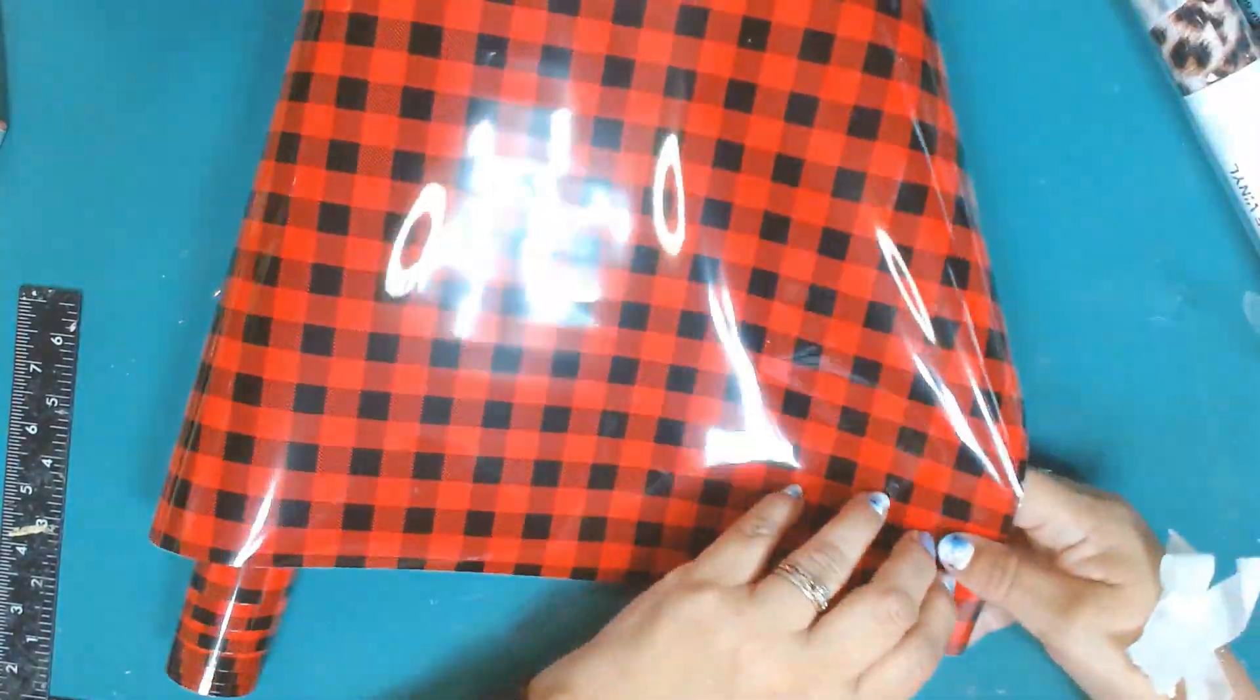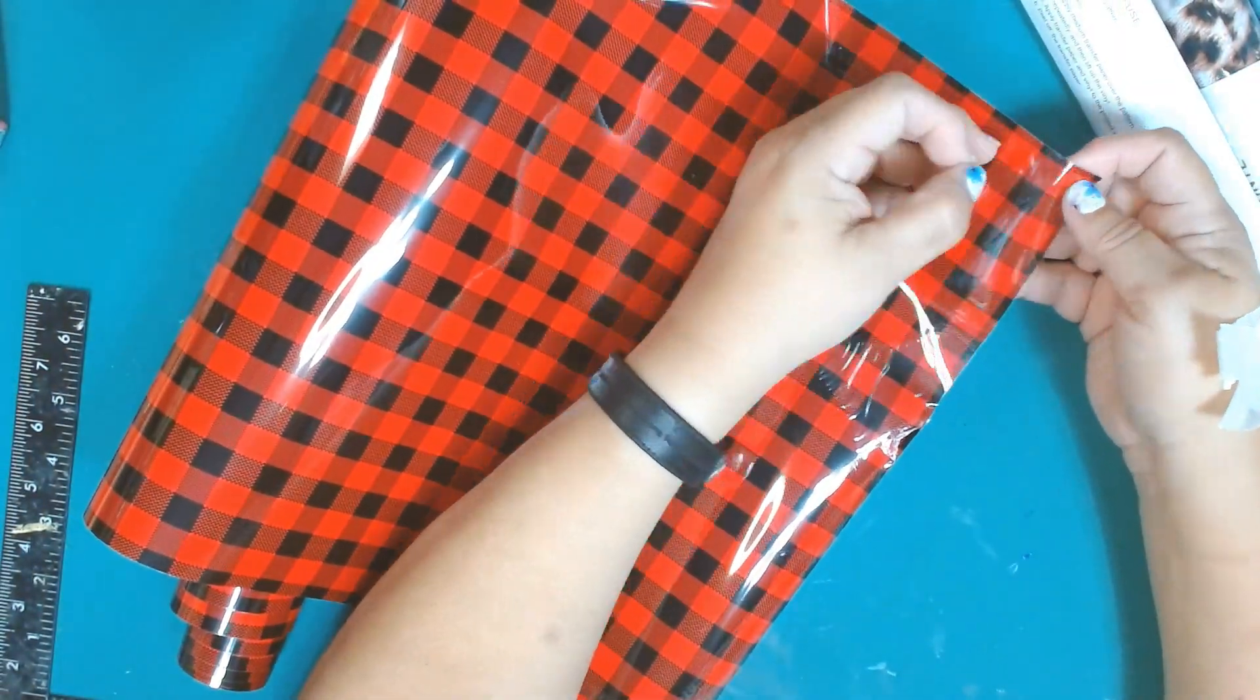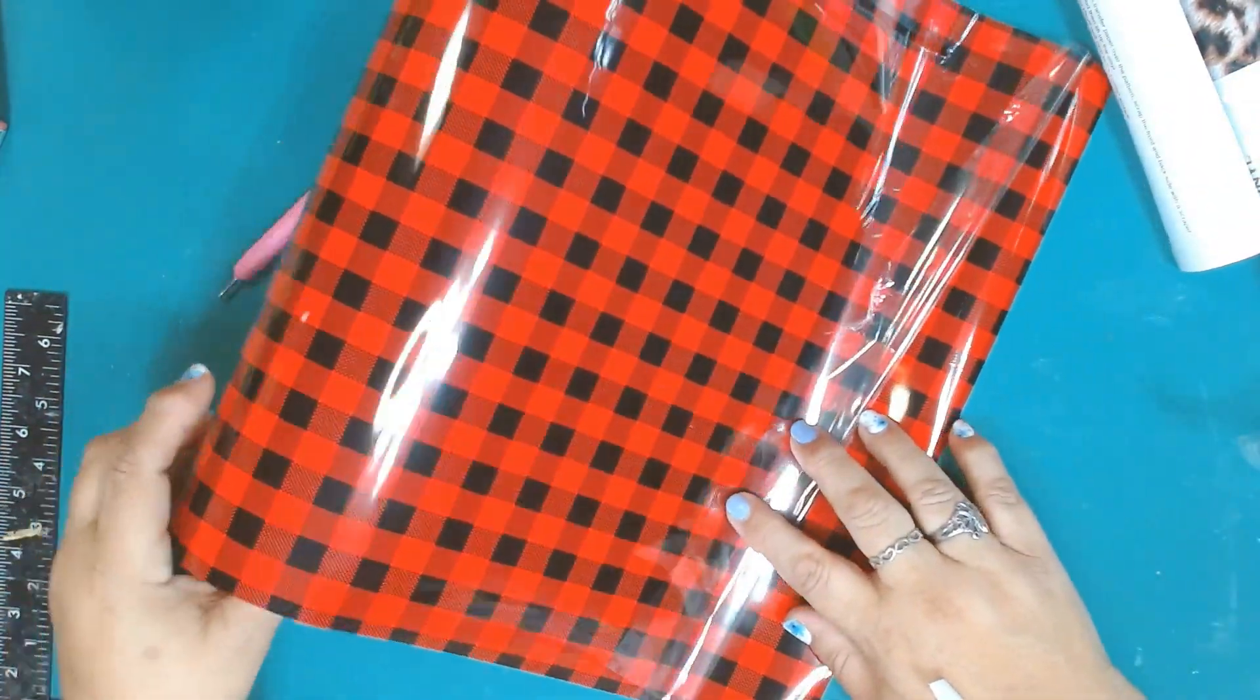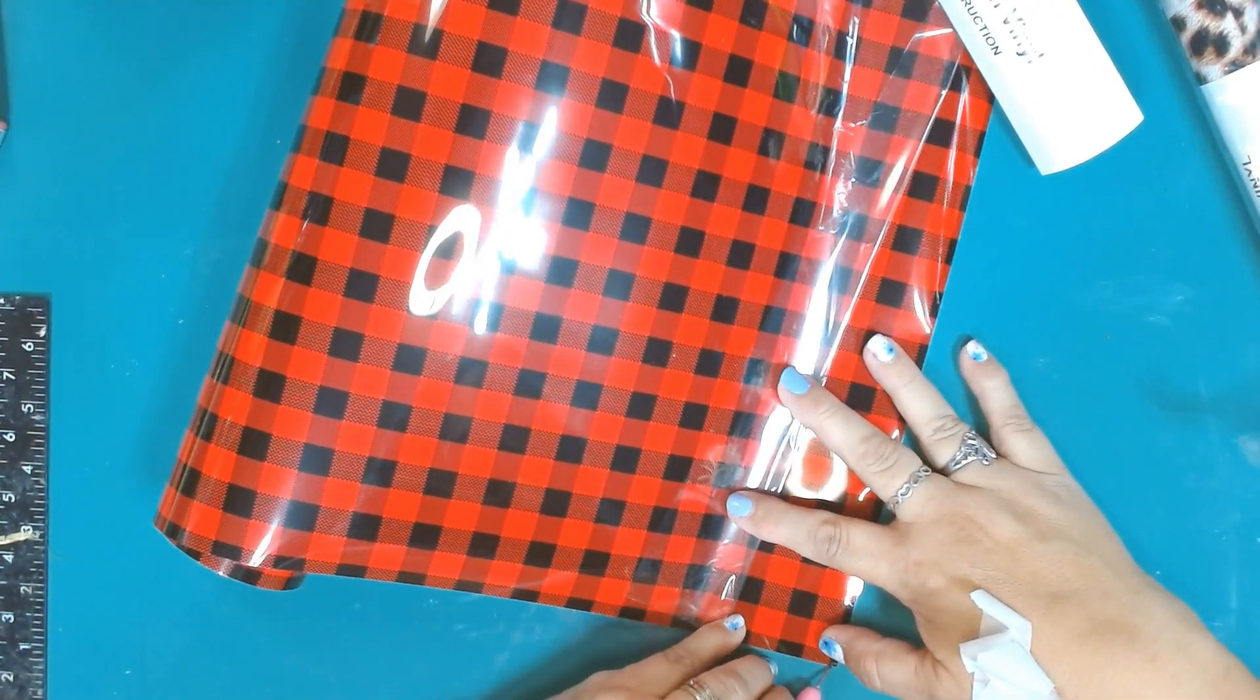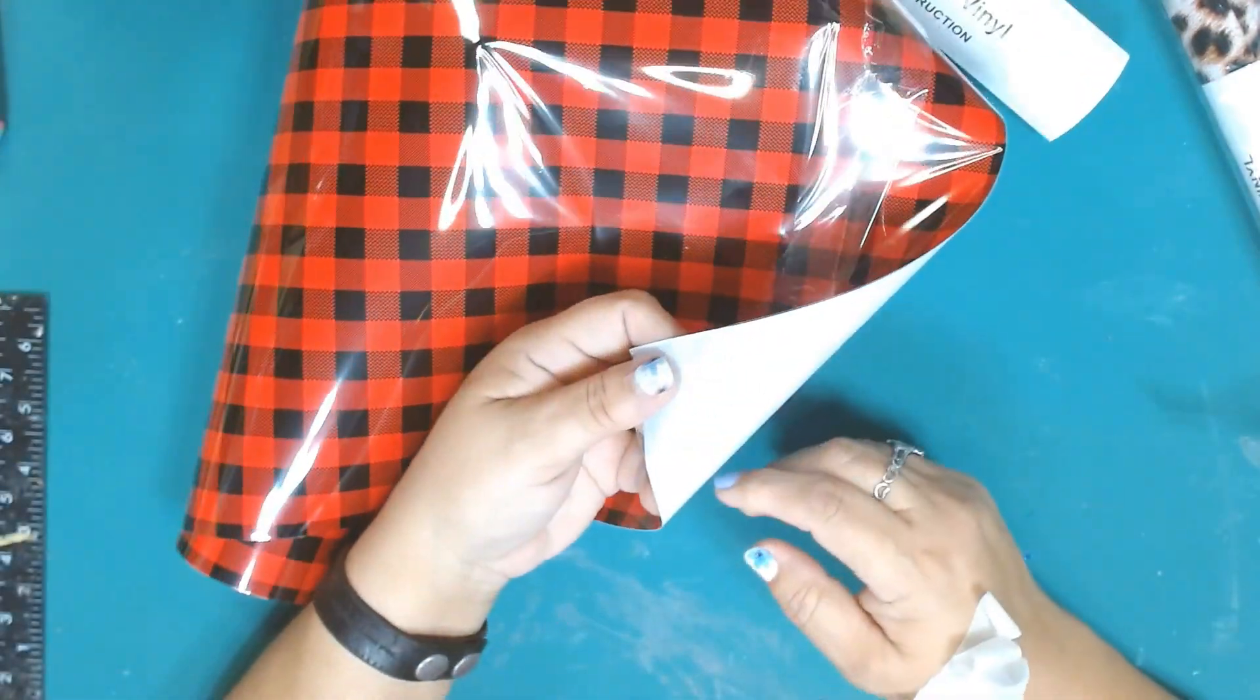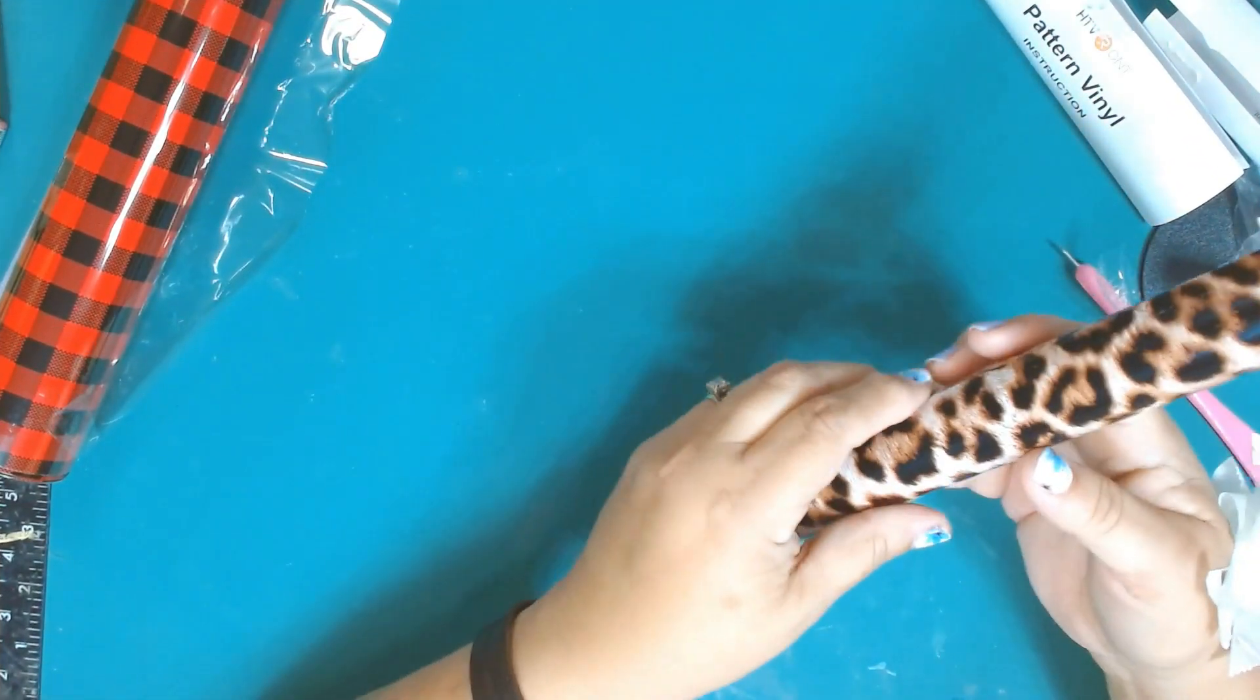Right here you'll see it has a clear covering on it, so I guess it's to protect the vinyl itself. Before you put it into your machine, make sure you remove that clear cover. I'm checking the adhesion to see how sticky it is, and it's pretty sticky. This is also different because the carrier sheet is clear instead of white.